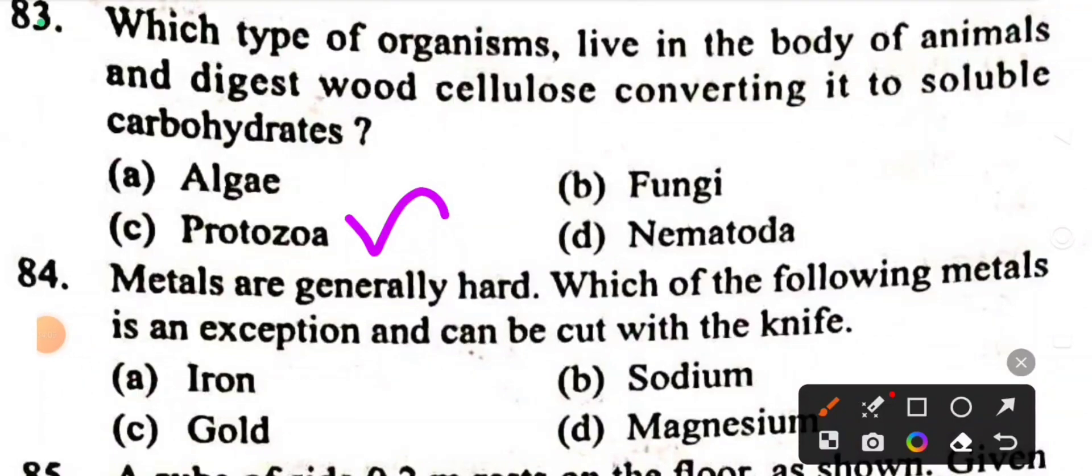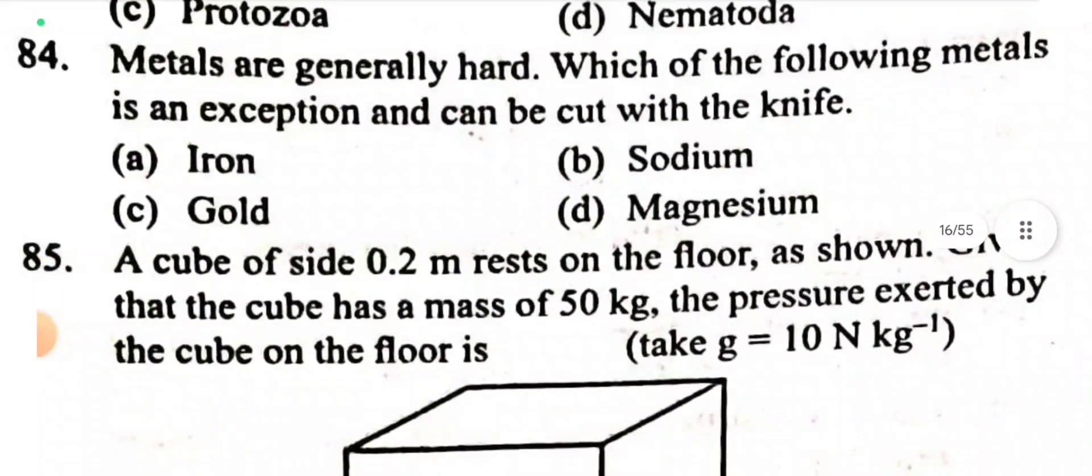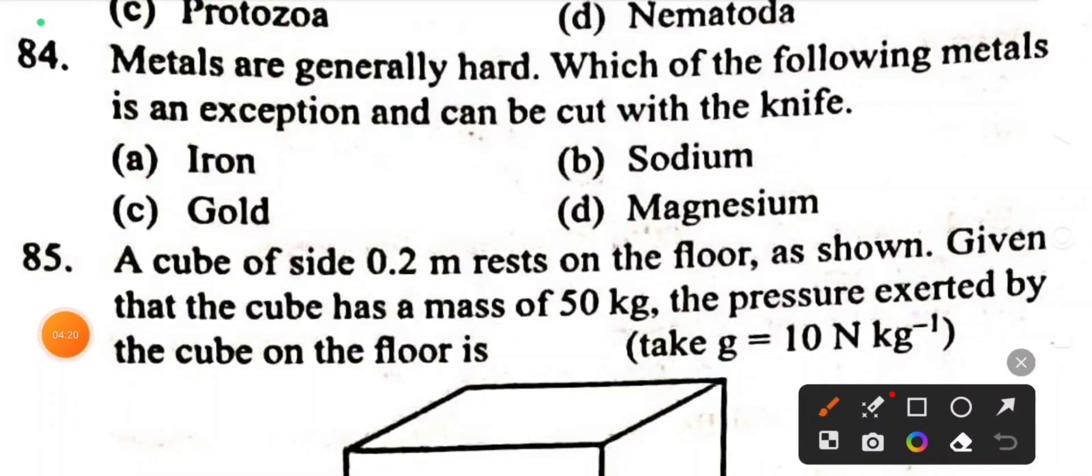Question 84: Metals are generally hard. Which of the following metals is an exception and can be cut with a knife? Sodium. Sodium and potassium are so soft they can be cut with a knife.